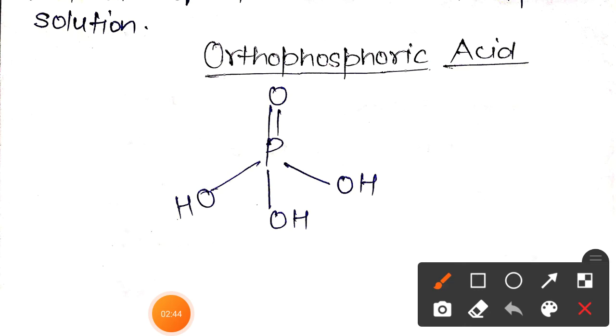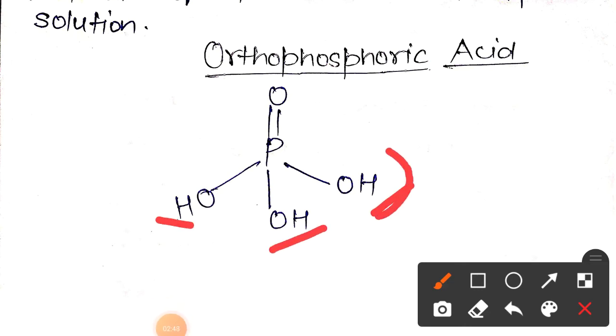There are 3 hydrogen atoms in H₃PO₄, and all three are ionizable. Hence, the basicity of the molecule is 3.